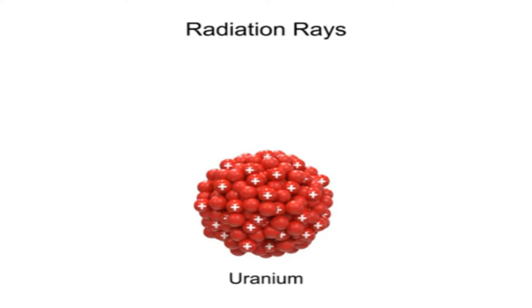The nucleus of radioactive material emits three different types of radiation rays, called alpha, beta, and gamma.